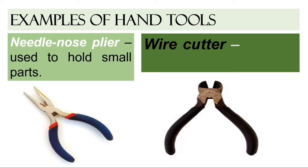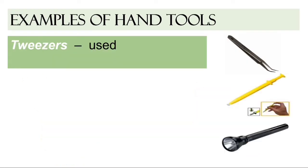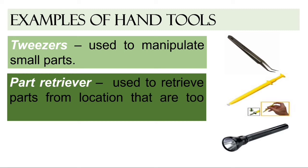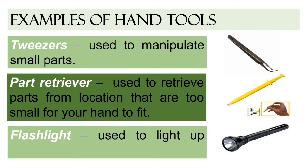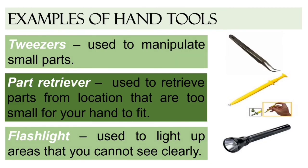There is also a tool used to hold small parts. Wire cutter — this tool is used to strip and cut wires. Tweezers — this tool is used to manipulate small parts. Part retriever — this tool is used to retrieve parts from locations that are too small for your hand to fit. Flashlight — this tool is used to light up areas that you cannot see clearly.